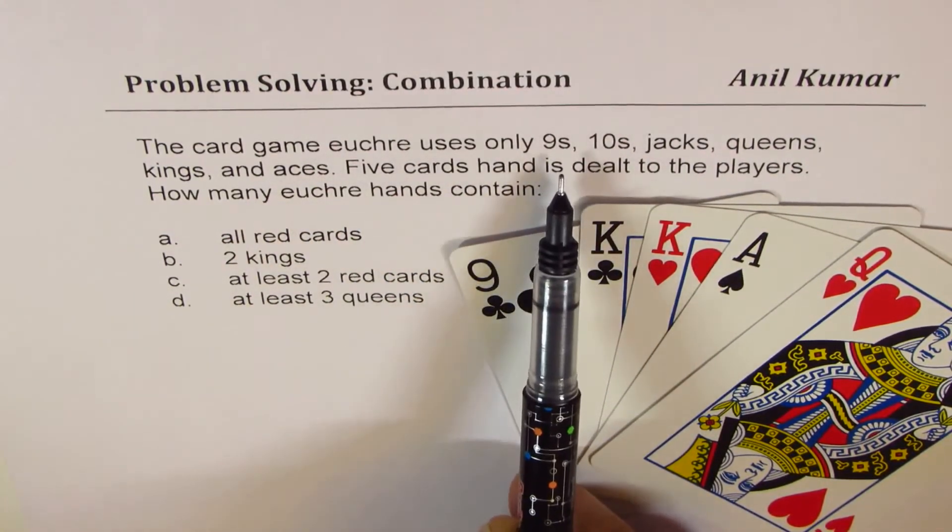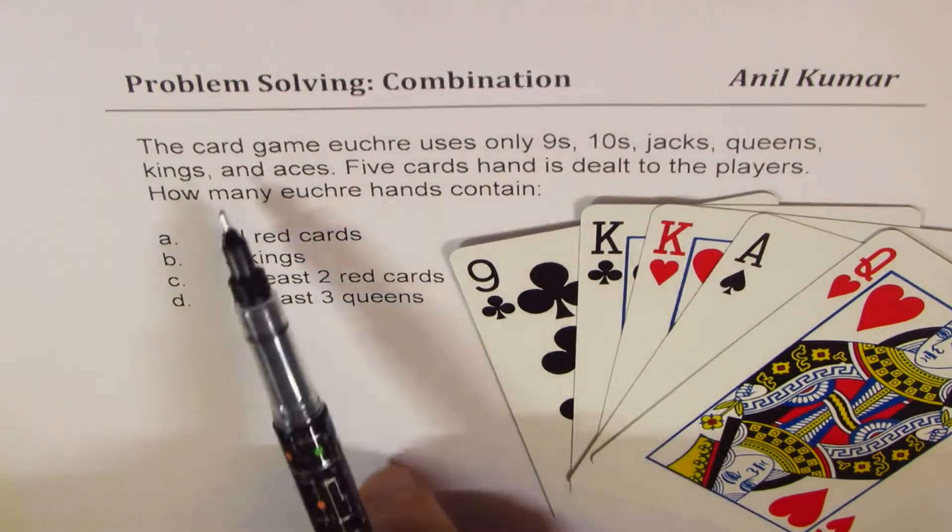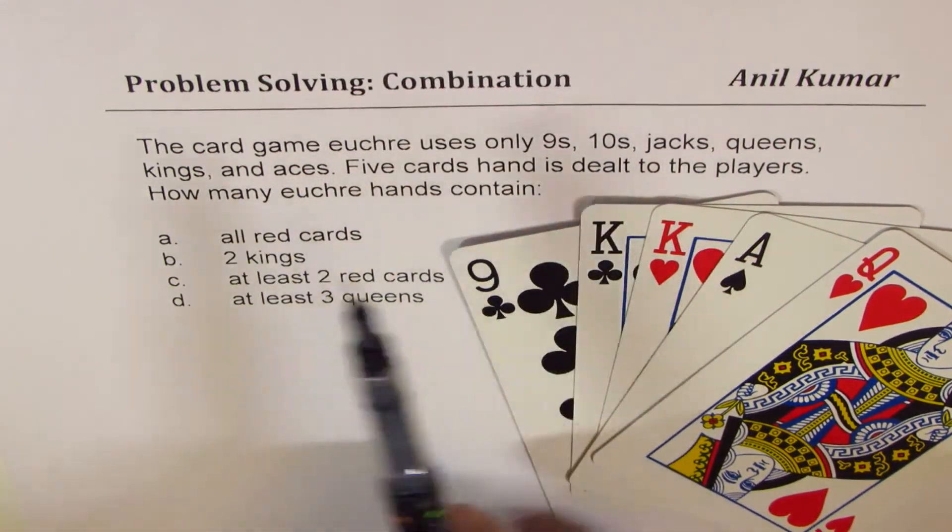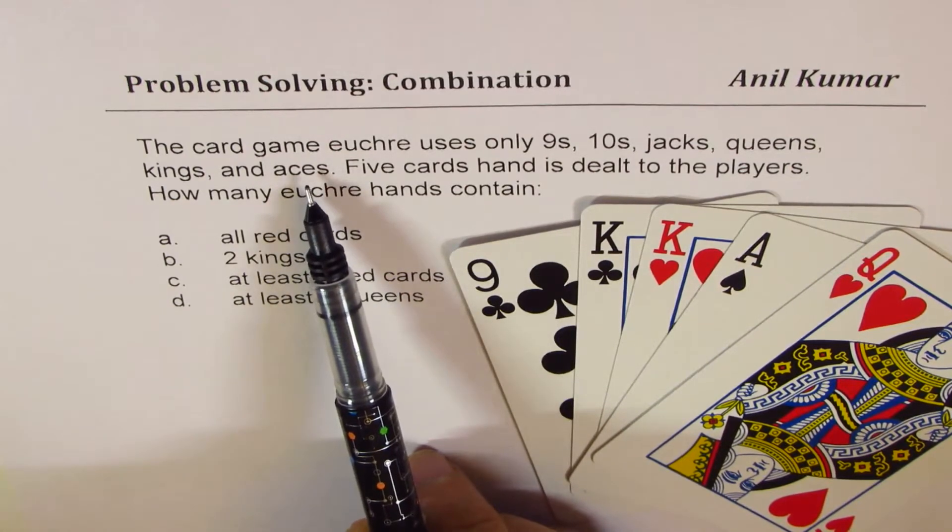So there are basically six cards: nines, tens, jacks, queens, kings, and aces. Six cards, four suits, so there are 24 cards in all.